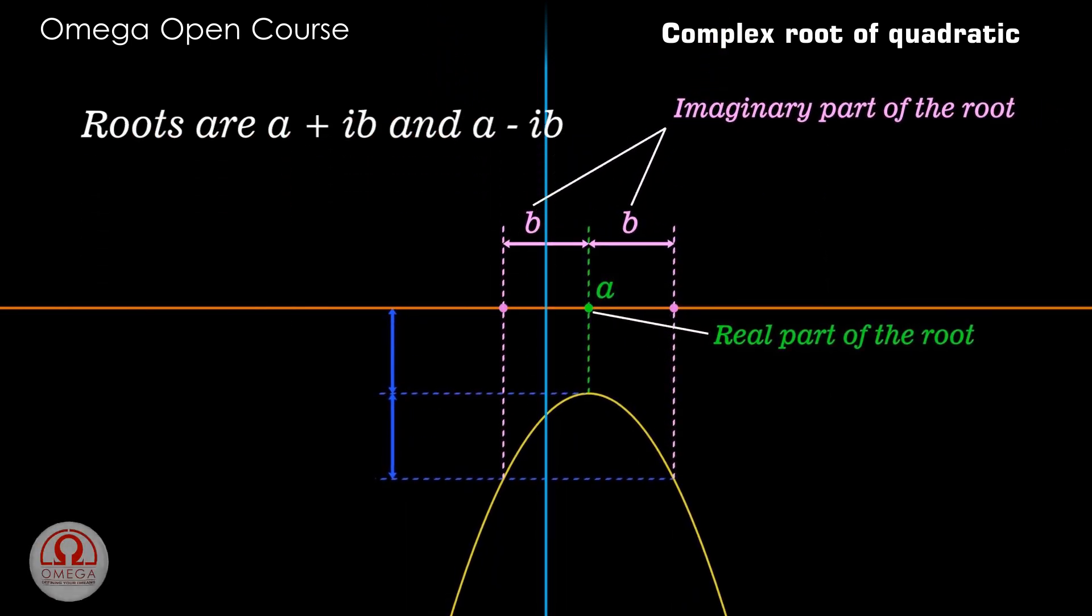If the leading coefficient of your quadratic expression is negative then you get an inverted parabola. But the steps to find the real and imaginary parts remain the same.